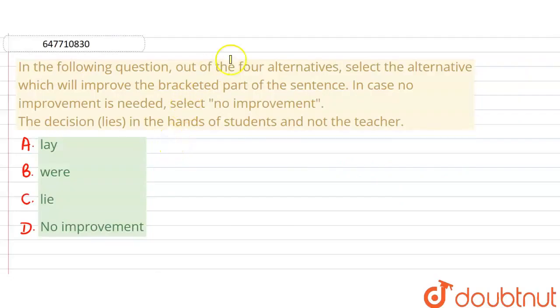Hello everyone, the question is, we have four alternatives and we need to select which option is the best substitute of the bracketed part. Which can improve the bracketed part. If in case the bracketed part is already correct and needs no improvement, then we will choose the option that says no improvement, that is option D. So let's look at this sentence.